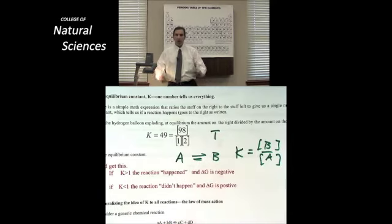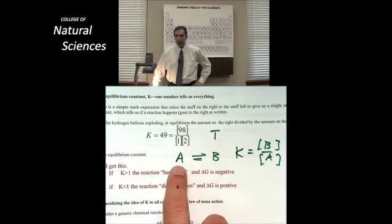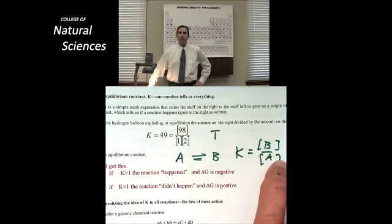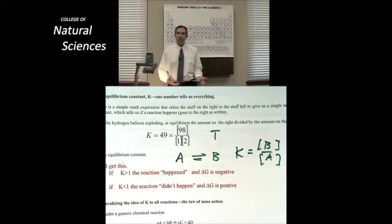if after I put the stuff in the pot, A and B, and I say go, and I end up making more A than B, then my number in the denominator is going to be bigger than in the numerator, and K is going to be less than 1.